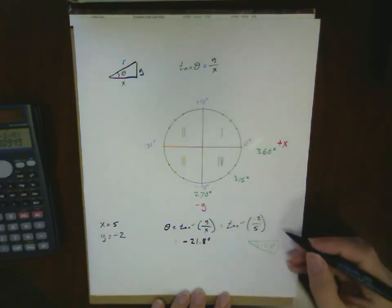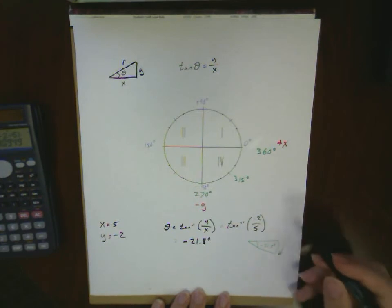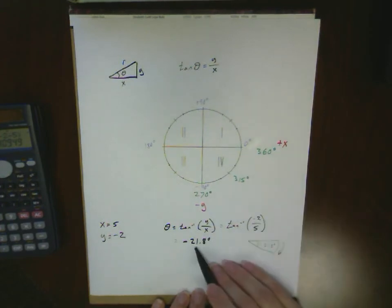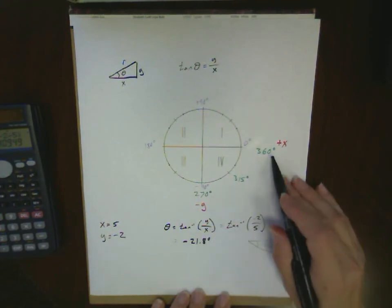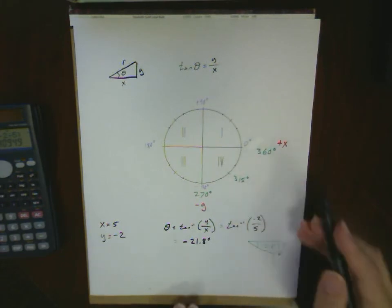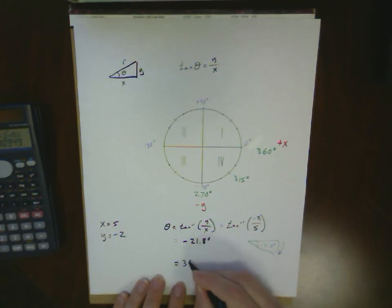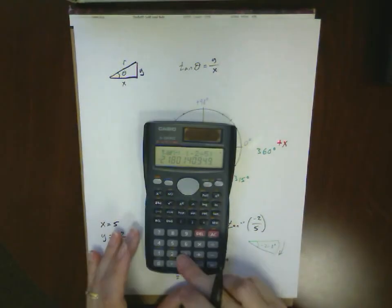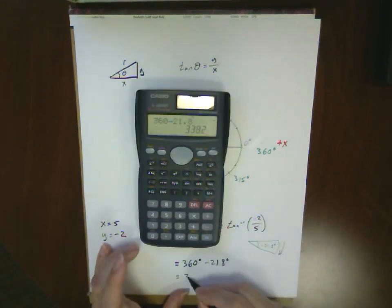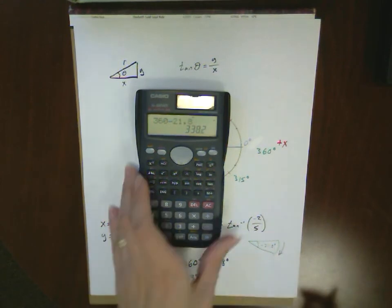realize that instead of measuring clockwise down, what we really have to do is go all the way around the circle. The other way to think of this is this is 21.8 degrees below the 360 degree line. So rather than measuring it versus the 0, it's versus the 360. So we can get our number if we take 360 degrees minus our 21.8 degrees. And in our calculator, that becomes an angle of 338.2 degrees.